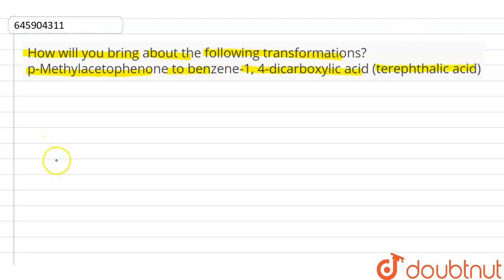Firstly we draw the structure of p-methylacetophenone. And the structure like this. That is our p-methylacetophenone.